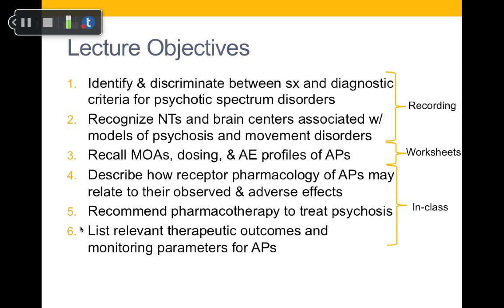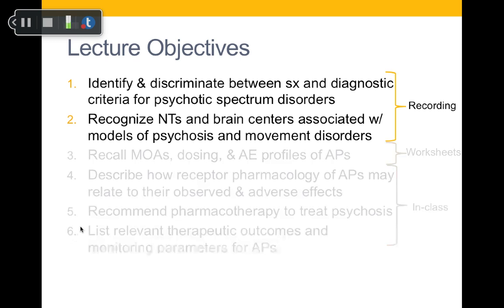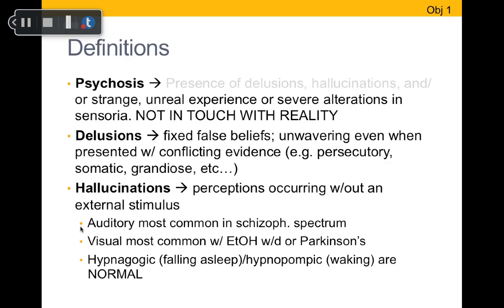For the lecture objectives, all six listed are overall objectives for the whole Psychotic Disorders series. For this pre-lecture recording, we'll focus on the first two: identifying and discriminating between signs, symptoms, and diagnostic criteria for psychotic spectrum disorders, and recognizing the neurotransmitters and brain centers associated with models of psychosis and movement disorders.